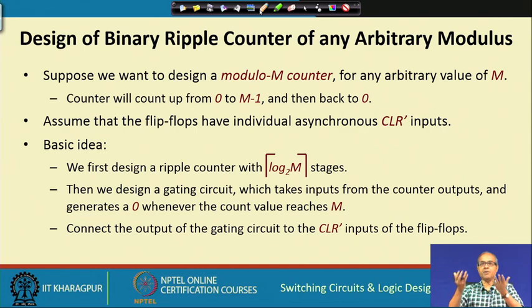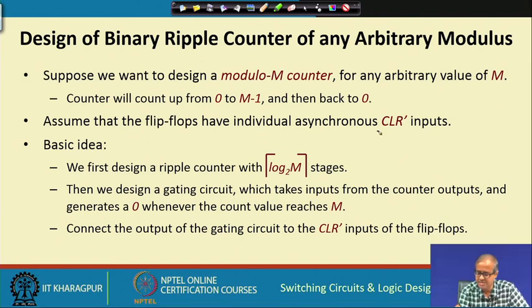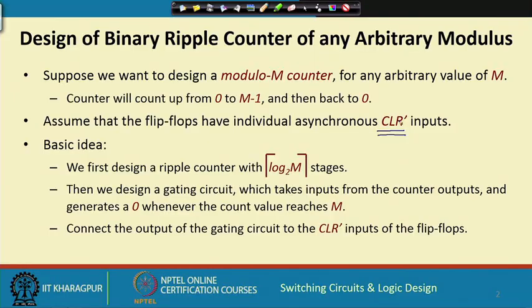We are designing an up counter — down counters can be designed in a similar way, but for now we assume it counts upward: 0, 1, 2, 3, 4 up to m minus 1. We assume the flip-flops have individual asynchronous clear inputs which are active low, meaning if the clear input is set to 0, all flip-flops reset to 0. The idea is: whenever the counter tries to reach m, we forcibly bring it back to 0 by clearing the flip-flops. For a mod 6 counter counting 0 through 5, as soon as it tries to become 6, we activate the clear inputs and all flip-flops become 0.